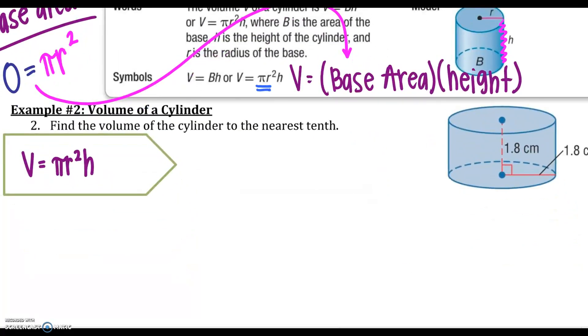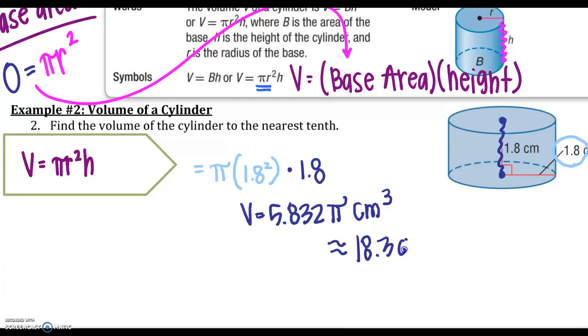Here is my, I am going to say pi. My radius is 1.8 squared. The only thing I am going to square is my 1.8, and then times my height from circle to circle, it is 1.8. I can get my volume to be 5.832 pi centimeters cubed, and I would probably just say 18.3 centimeters cubed. Turn to the next one. Do your check your progress.